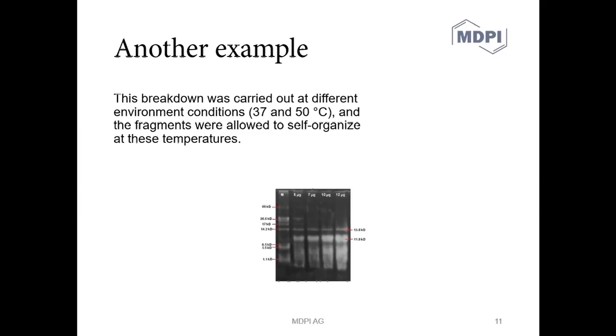So here's another example. This breakdown was carried out at different environmental conditions and the fragments were allowed to self-organize at these temperatures. So again it's fairly clear what the authors are trying to say, but I think there's a few words that we can change that could improve the writing. So firstly we've got environmental conditions which refers to a whole range of things that can refer to pressure, temperature, humidity and so on. But we actually mean temperatures. The 37 and 50 degrees C in brackets really indicates this. So let's be more specific there. And then we also mentioned temperatures at the end of the sentence. So maybe we can ask whether we really need to mention it twice. And then we also maybe take a little bit of issue with the fragments being allowed to do something. We're not specifically giving them permission to do so. I mean maybe I'm being a little bit too judgmental here because this is a fairly commonly used phrase. But let's see how we can phrase it differently.